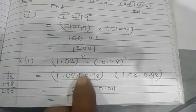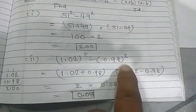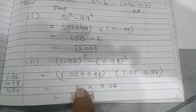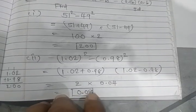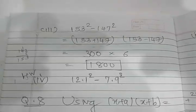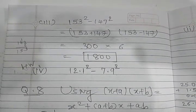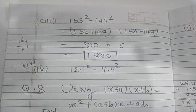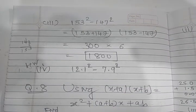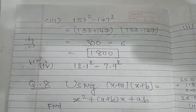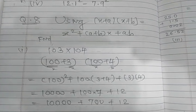1.02 whole square minus 0.98 whole square. a square minus b square, a plus b, a minus b. Addition kardo iska, you will get this. Yaan iska subtraction kardo, you will get this, you will get this answer. Very easy. 153 square minus 147 square, so 153 plus 147, 153 minus 147, 300 into 6, you will get 1800 answer. Fourth one it is homework for you.